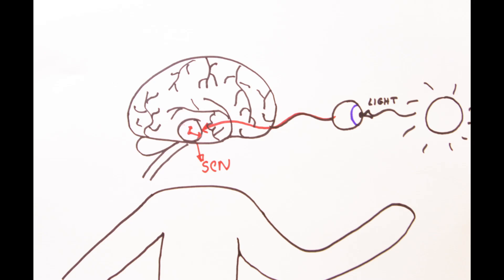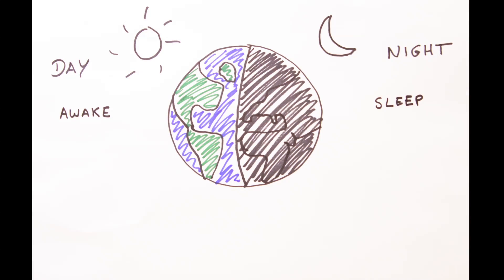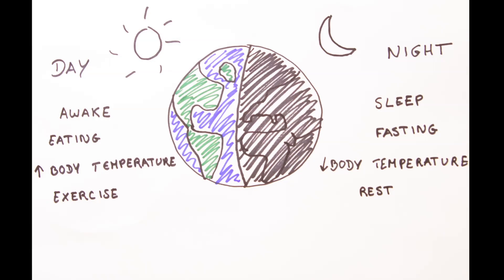The SCN then adjusts its internal clock to the correct time of day and sends a timekeeping signal to the cellular clocks in the rest of the body. The resulting circadian rhythms in our behavior and physiology last approximately a day.